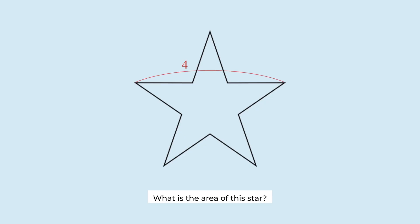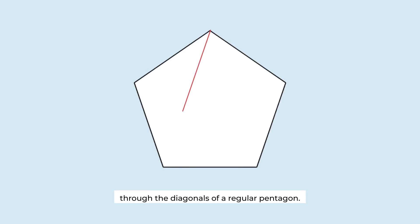This length is 4. What is the area of this star? A star is formed through the diagonals of a regular pentagon.